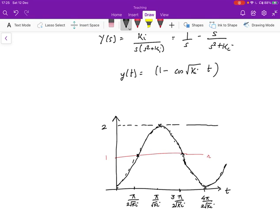So the graph of this looks something like this. When time is zero, this value over here, cos square root ki t, is going to be one. So the value of one minus this is going to be zero. So we have this point over here.